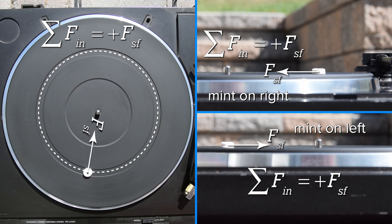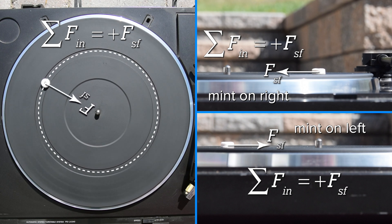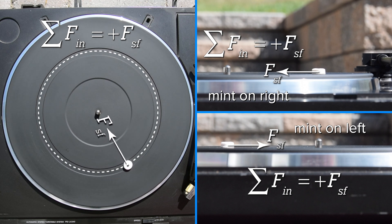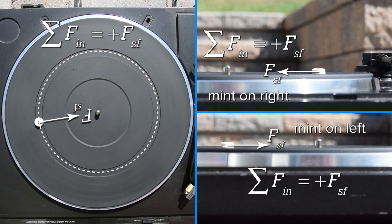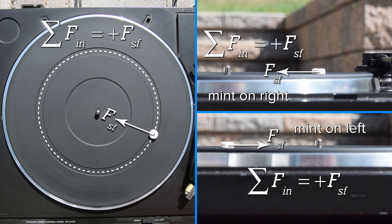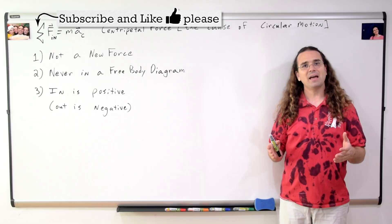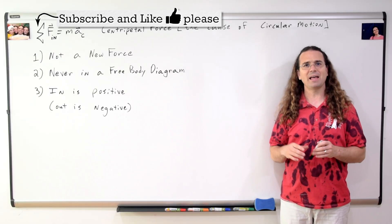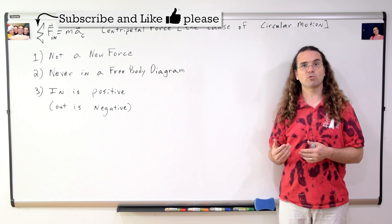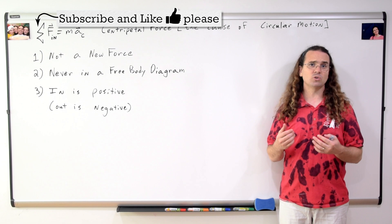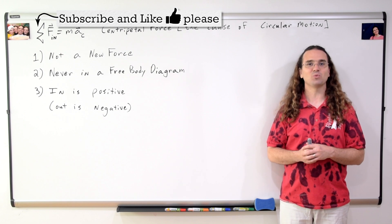The net force in the in-direction in this example always equals the positive force of static friction. So for the mint, in this specific example, the net force in the in-direction — or the centripetal force — is the force of static friction. That is what it means that the centripetal force is not a new force. That is just one example, but don't worry. We will analyze many more situations where we draw the free body diagram and sum the forces in the in-direction to determine the centripetal force. Thank you very much for learning with me today. I enjoyed learning with you.